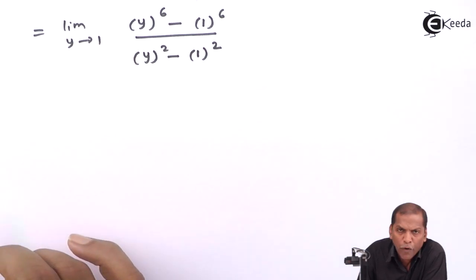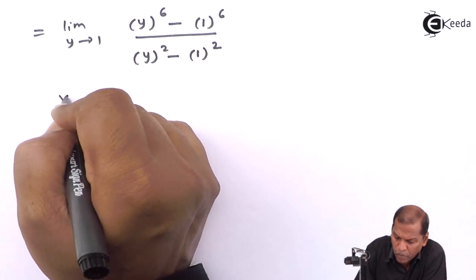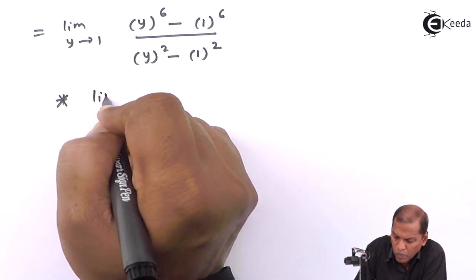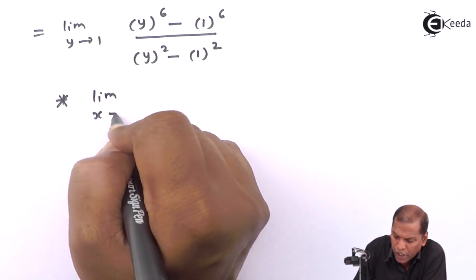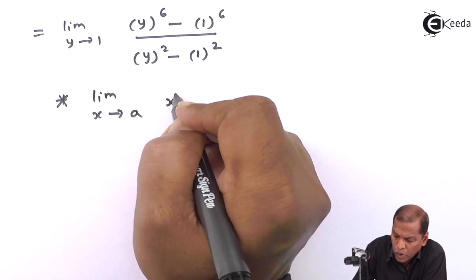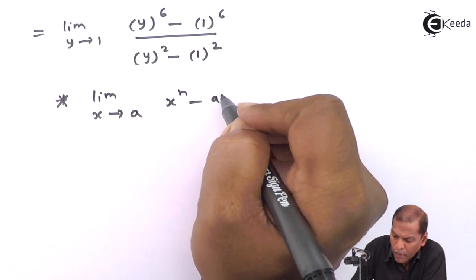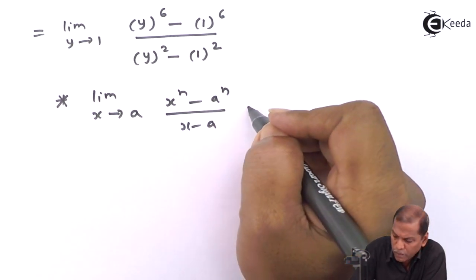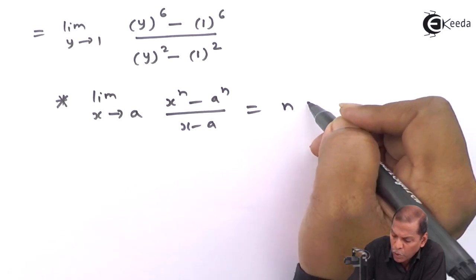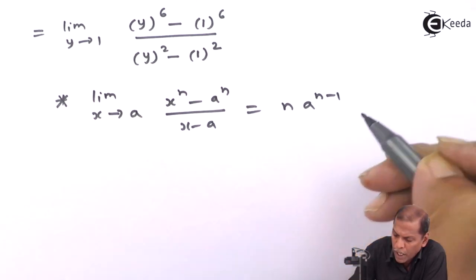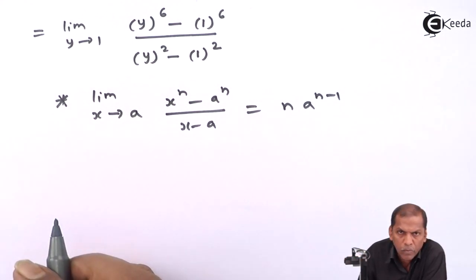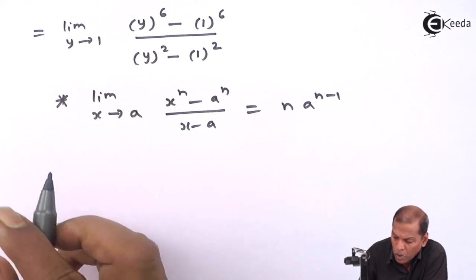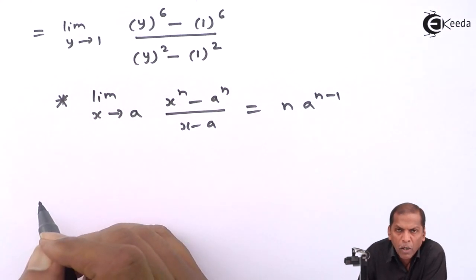Now, we use the formula: limit as x tends to a of (x^n - a^n)/(x - a) equals n times a^(n-1). So in this case, we have to divide numerator and denominator by (y - 1).